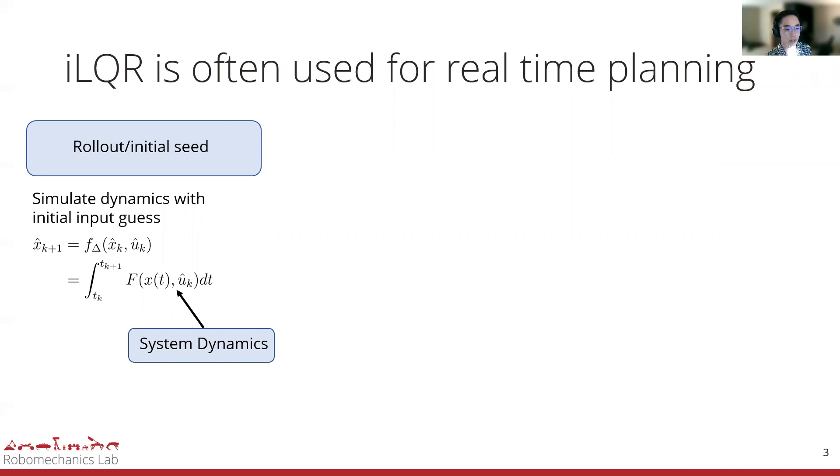iLQR works by first starting with an initial guess for the inputs. Oftentimes, zero input is chosen, so this uK would be zero for each time step K. This initial guess is simulated forward using the system's dynamics. A quadratic cost is evaluated based on how much input is used and how much tracking error there is.